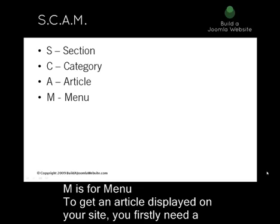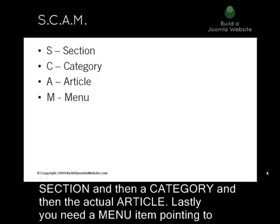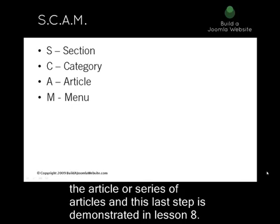To get an article displayed on your site, you firstly need a section, then a category, and then the actual article. Lastly, you need a menu item pointing to the article or series of articles. This last step is demonstrated in Lesson 8.